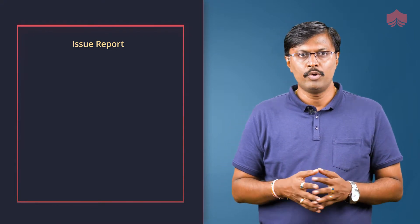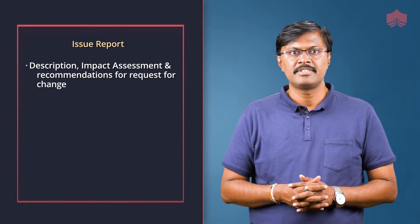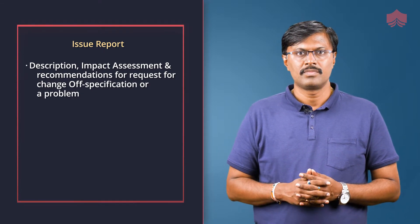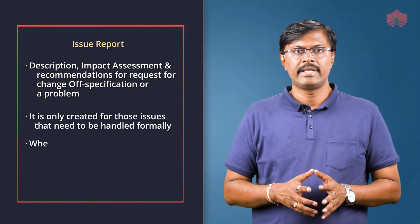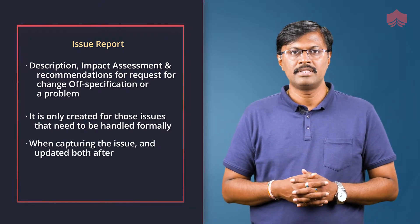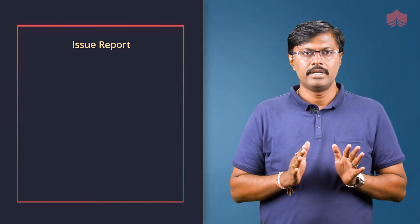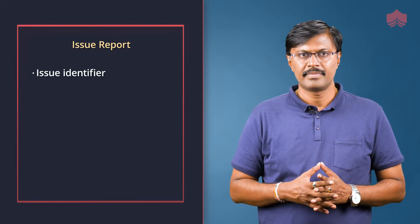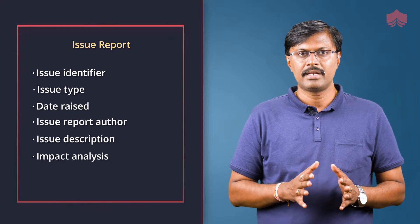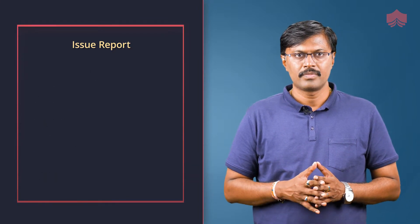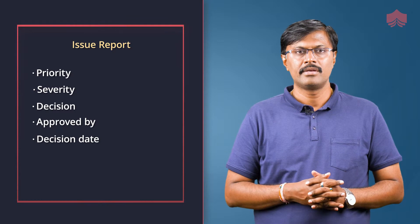An issue report is a report containing the description, impact assessment and recommendations for a request for change, off specification or a problem or concern. It is only created for those issues that need to be handled formally. The report is initially created when capturing the issue and updated after the issue has been examined and when proposals are identified for issue resolution. Issue report is composed of: issue identifier, issue type, date raised, issue report author, issue description, impact analysis, recommendation, priority, severity, decision, approved by, decision date and closure date.